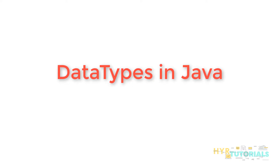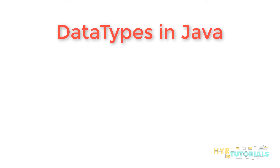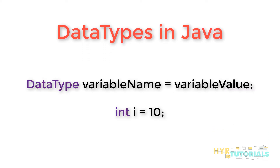This data types term will come into the picture when we are talking about variables. While creation of a variable, we need to specify the data type also. So what is a data type? A data type is a type of data that will tell the compiler what kind of value a variable can store.